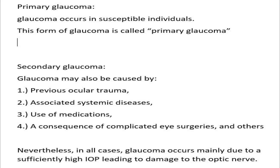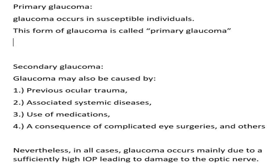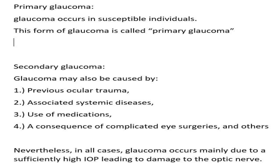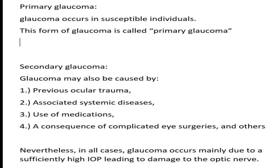Now, let us discover how glaucoma begins. In the great majority of cases, glaucoma occurs in susceptible individuals. This form of glaucoma is called primary glaucoma — it does not occur as a result of any other eye problem. Glaucoma may also be caused by previous ocular trauma, associated systemic diseases, use of medications, a consequence of complicated eye surgeries, and others. In these situations, the disease is called secondary glaucoma.